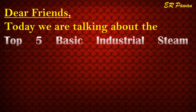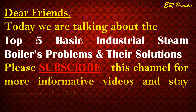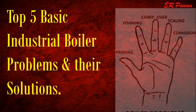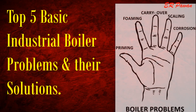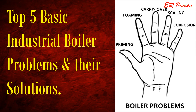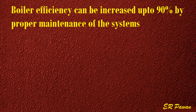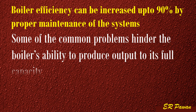Dear friends, today we are talking about the top 5 basic industrial steam boiler problems and their solutions. Please subscribe to this channel for more informative videos and stay connected with us. Boiler efficiency can be increased up to 90% by proper maintenance of the systems. Some common problems hinder the boiler's ability to produce output to its full capacity, as we are describing in today's video.